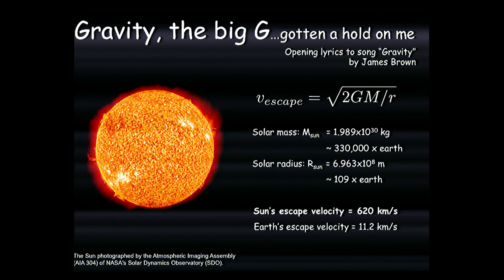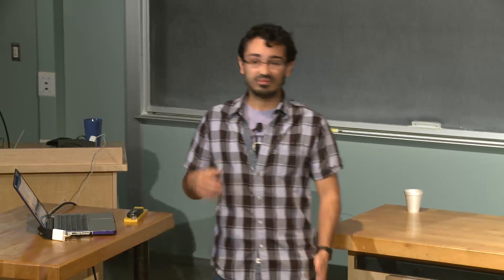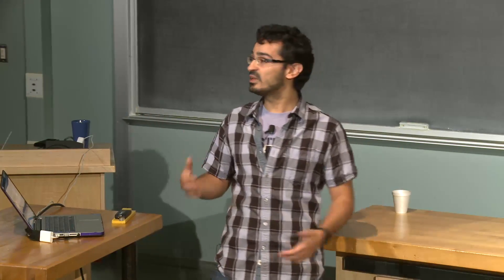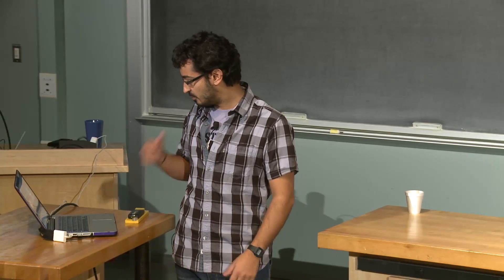The mass of the sun is about 340,000 times the mass of Earth, so it's very massive. We also know the radius of the sun, which is about 110 times the radius of Earth. If we plug in those numbers — G is a constant, plug in the mass and radius of the sun — the escape velocity comes out to around 620 kilometers per second. If we do the same thing for Earth, we find that the escape velocity of Earth is around 11 kilometers per second. So if you want a rocket to escape the gravitational attraction of Earth, you need to be going faster than 11 kilometers per second.